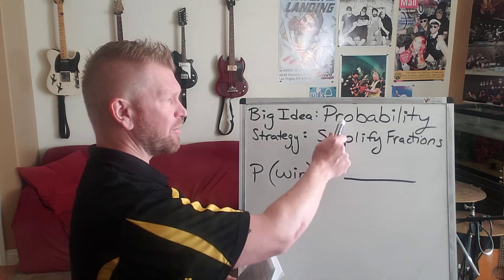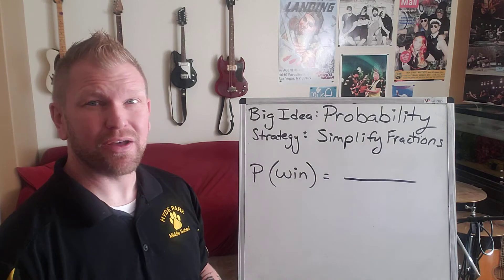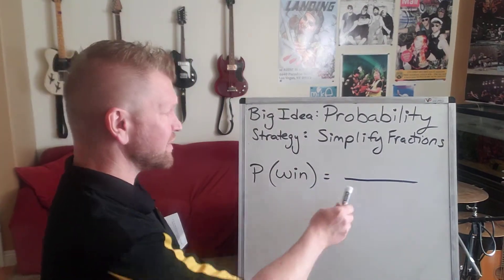Alright, so the big idea is probability. We've discussed that in one of the past problems. And the strategy we need to apply to this problem is simplify our fractions because probability is going to be a fraction.